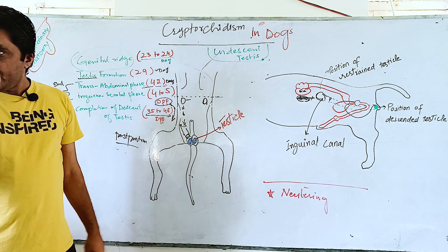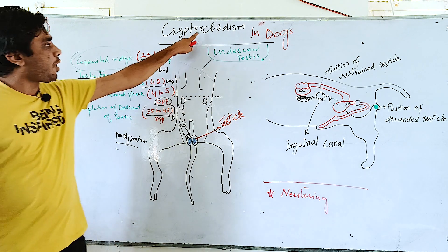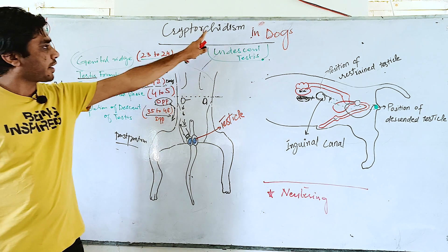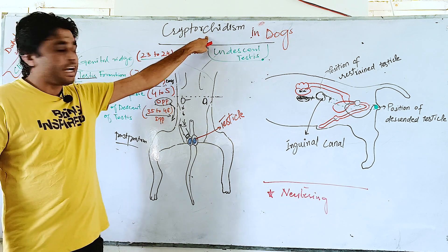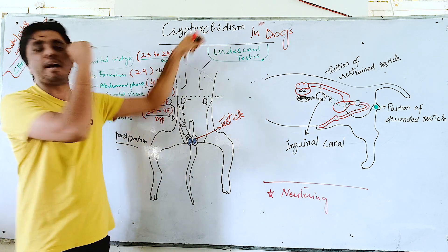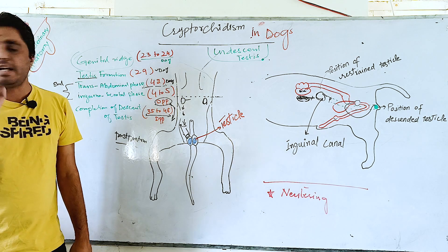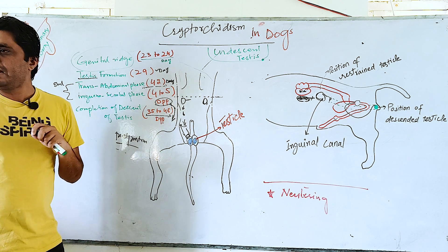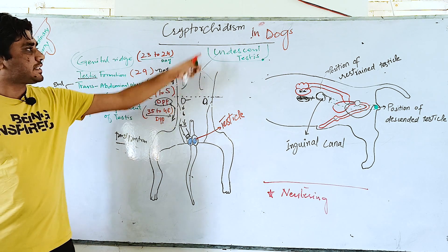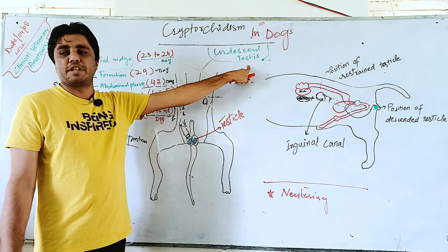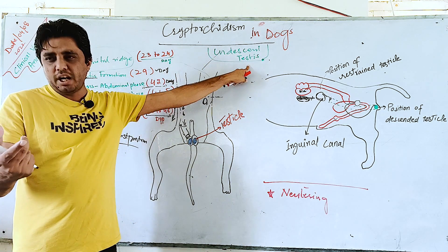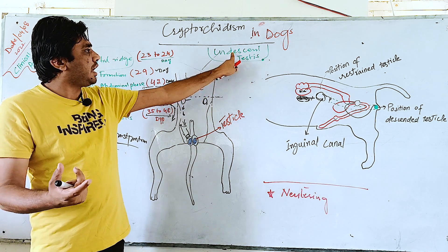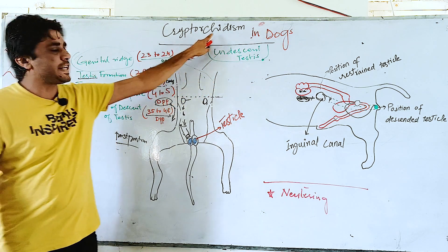Now, our core topic: what is cryptorchidism? This is a condition where the descent of testes fails. The testes will be retained in the abdomen. You will observe a dog and find there are no testes in the scrotum. That condition is called undescended testes, or cryptorchidism.